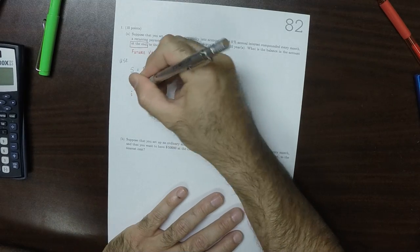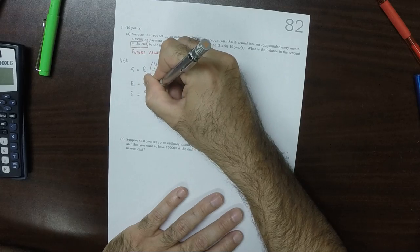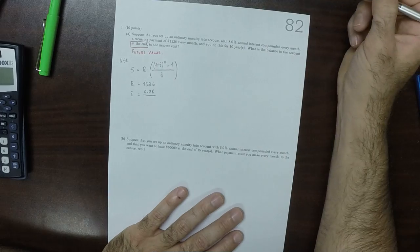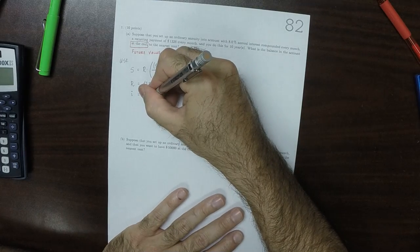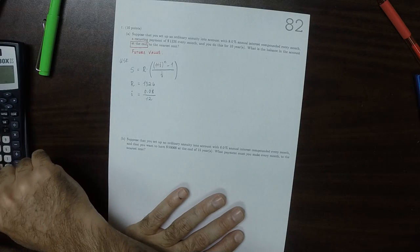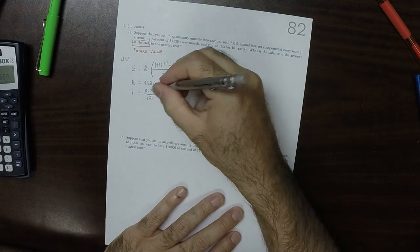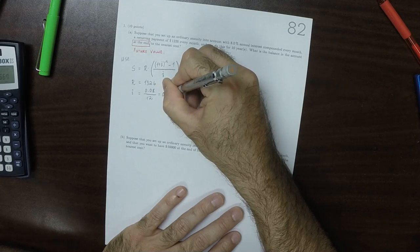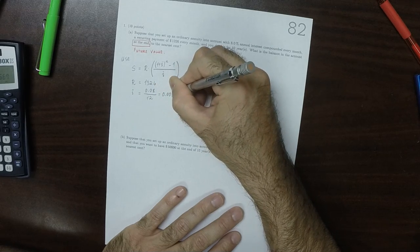The interest I is 0.08 but that's annual interest, so we'll have to divide by 12. So 0.08 divided by 12 equals 0.00666 repeating.